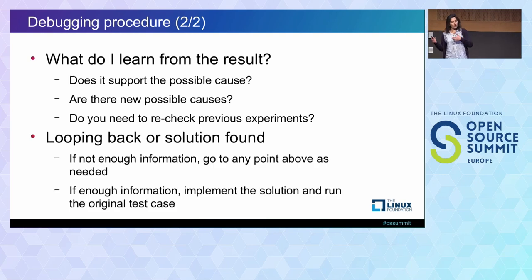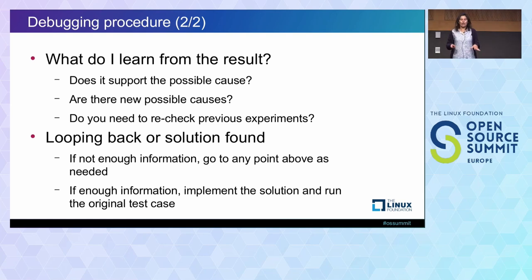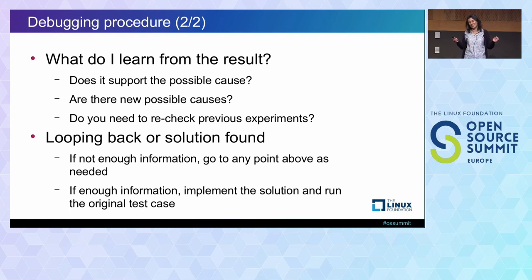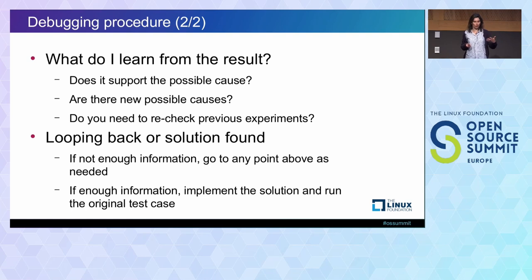Then we look back. Either we have found the solution, we are happy, and we implement the actual fix. At the end, we run the original first test case from the beginning to make sure we've actually fixed the issue. If you do not have enough information, go to any point above. Typically, you will go back to the list of possible causes and evaluate which one to work on next.